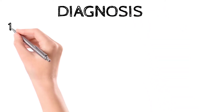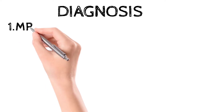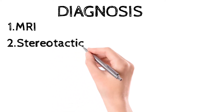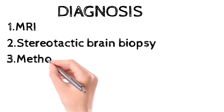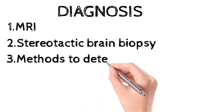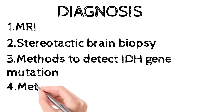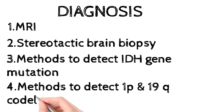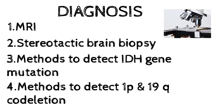For diagnosis, first MRI is needed to locate the brain tumor. Then surgical or stereotactic brain biopsy needs to be done and sent for histopathological examination. Methods are available to detect IDH gene mutation, as required by WHO criteria, and methods are also available to detect 1p and 19q co-deletion.